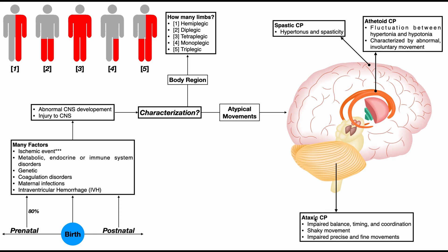Then we have ataxic CP. Thinking back to ataxia in general, the part of the brain that produces ataxia is the cerebellum — and here, it's cerebellar damage causing ataxic CP. What you see is impaired balance, timing, and coordination, shaky movements, and impaired precise and fine movements. This is very prominent when the person tries to sit upright using trunk control and also during walking.